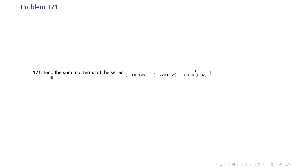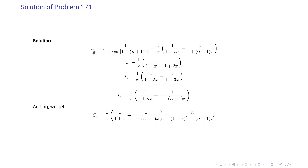Problem 171: Find the sum to n terms of the series 1/(1+x)(1+2x) + 1/(1+2x)(1+3x) + 1/(1+3x)(1+4x) and so on. The nth term is 1 / [(1+nx)(1+（n+1)x)].